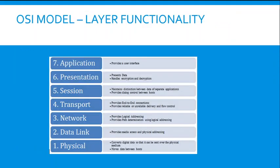Here is the layer functionality — what each layer does. The application layer provides the user interface (GUI). Layer 6, Presentation, presents data and handles encryption and decryption from first user to end user. Layer 5, Session, maintains a distinction between data of separate applications and provides dialogue control between hosts. Layer 4, Transport, provides an end-to-end connection, reliable or sometimes unreliable delivery, and flow control due to TCP and UDP. The Network layer provides logical addressing and path determination.